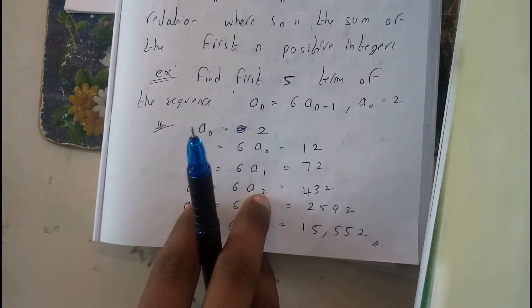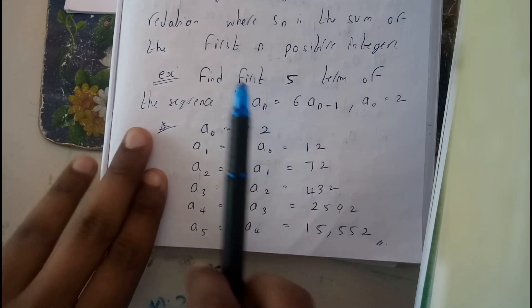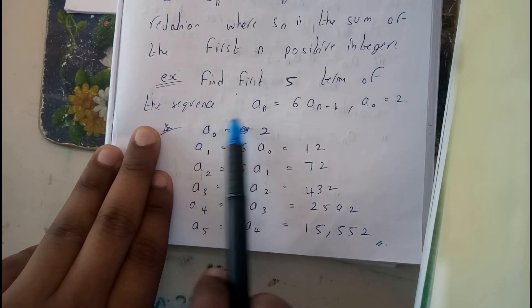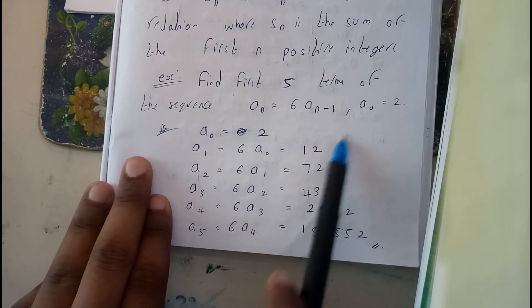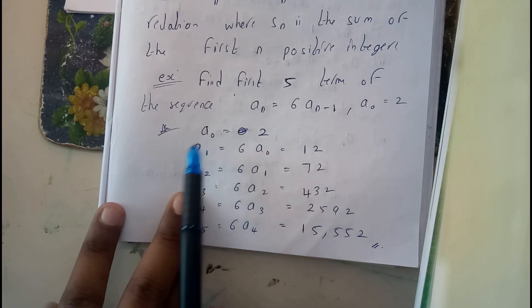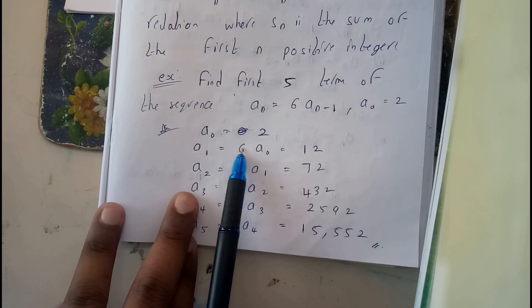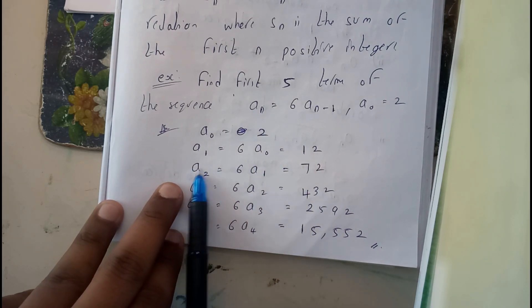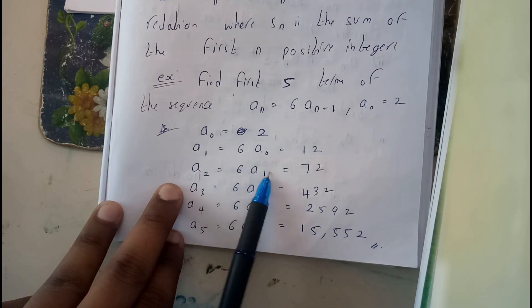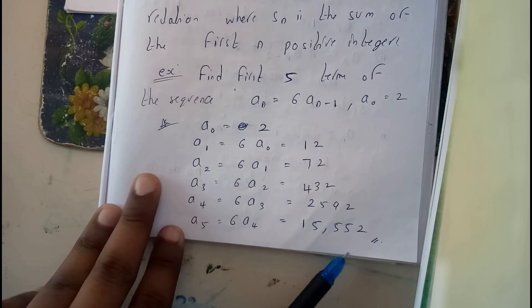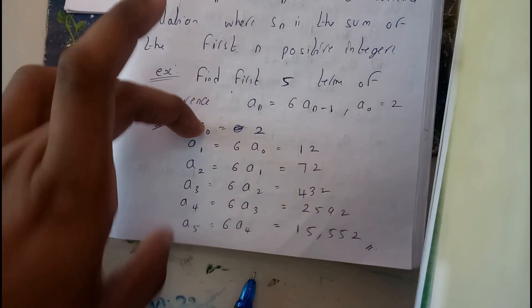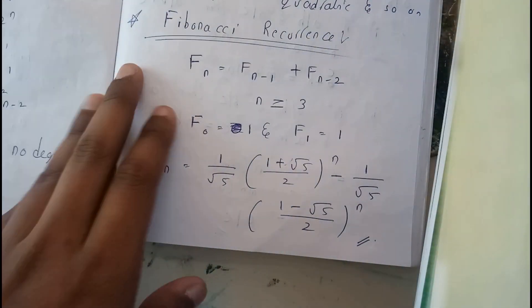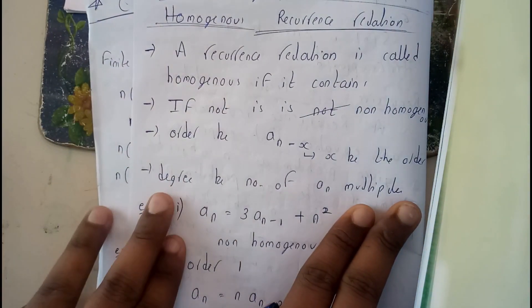As a basic problem, find the first five terms of the sequence a(n) = 6·a(n-1), where a(0) = 2. Initially a(0) = 2. Then a(1) = 6 × 2 = 12. Further, a(2) = 6 × a(1) = 6 × 12 = 72. Continuing, we find up to a(5). He asked to find five values, so we found five values. That is what recursion means.